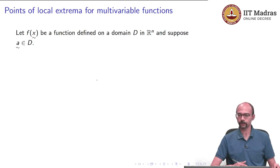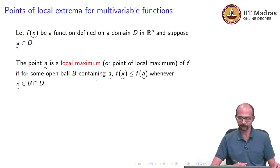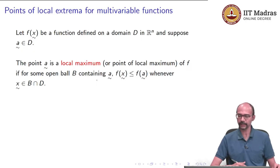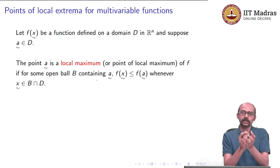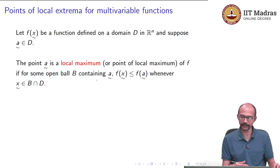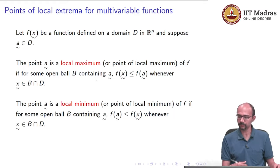Let f(x) be a function defined on a domain D in Rⁿ, and suppose you have a point A in D. The point A is a local maximum if, for some open ball B containing A, for all points in B that belong to the domain, f evaluated at those points is less than or equal to f(A). Similarly, A is a local minimum if f(A) is the smallest value within that set.